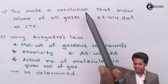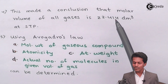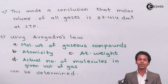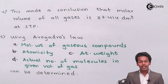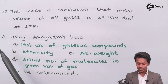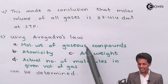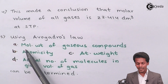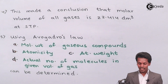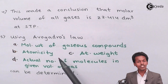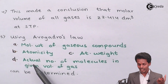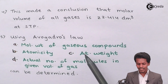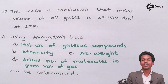This law also leads to the clear conclusion that the molar volume of all gases is 22.414 dm³ at STP. By using Avogadro's Law we can estimate: the molar weight of a gaseous compound, the atomicity, the atomic weight, as well as the number of molecules present in a given particular volume of a gas.